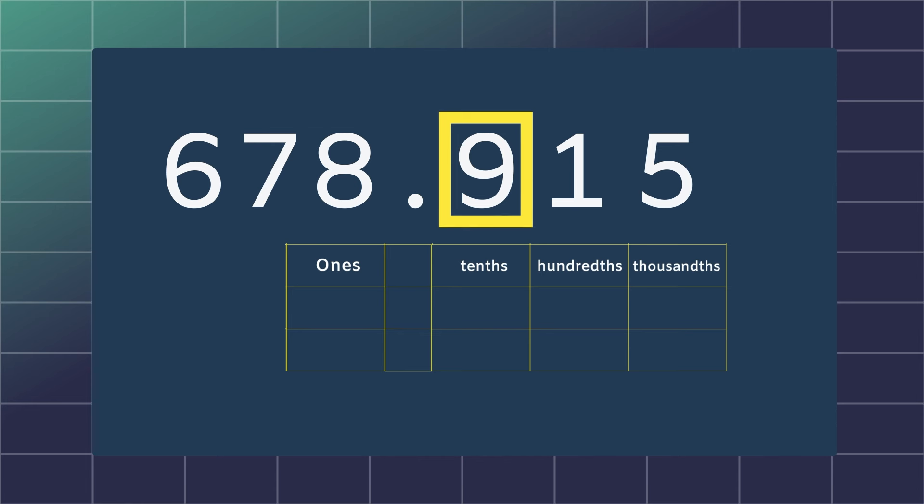If we want to find the place value of the number 5 in the number 68.915, we must look at the numbers on the right side of the decimal point. We have the tenths, hundredths and the thousandths place. Top tip, the base 10 will tell you how many digits should follow the decimal point.